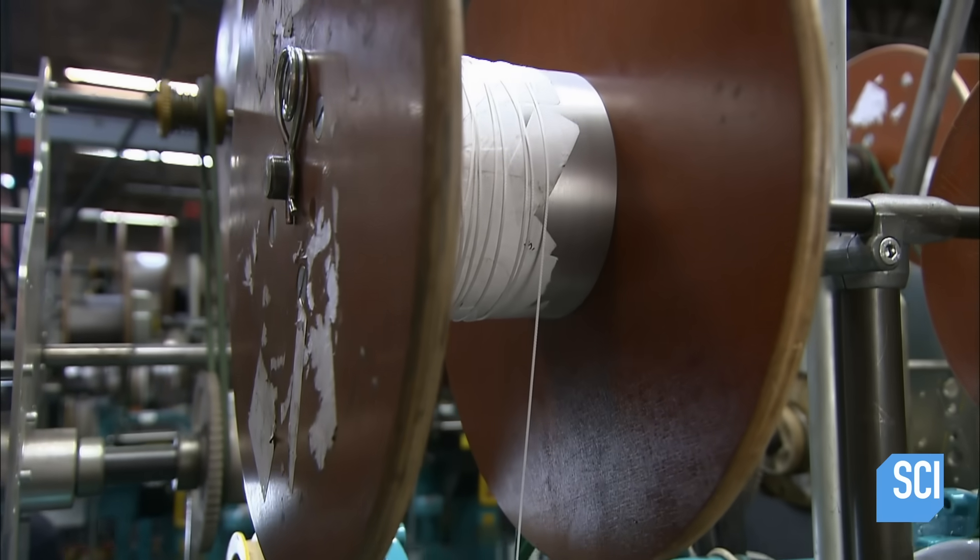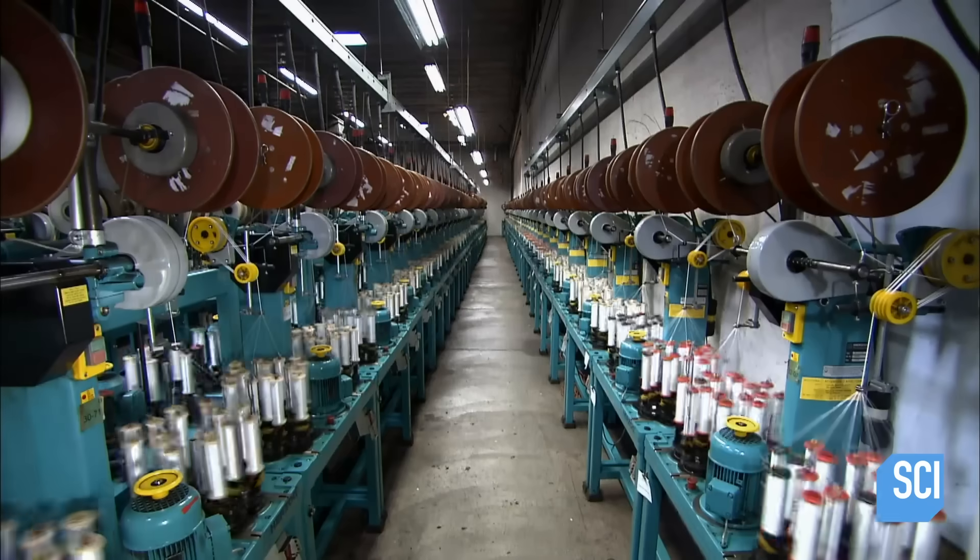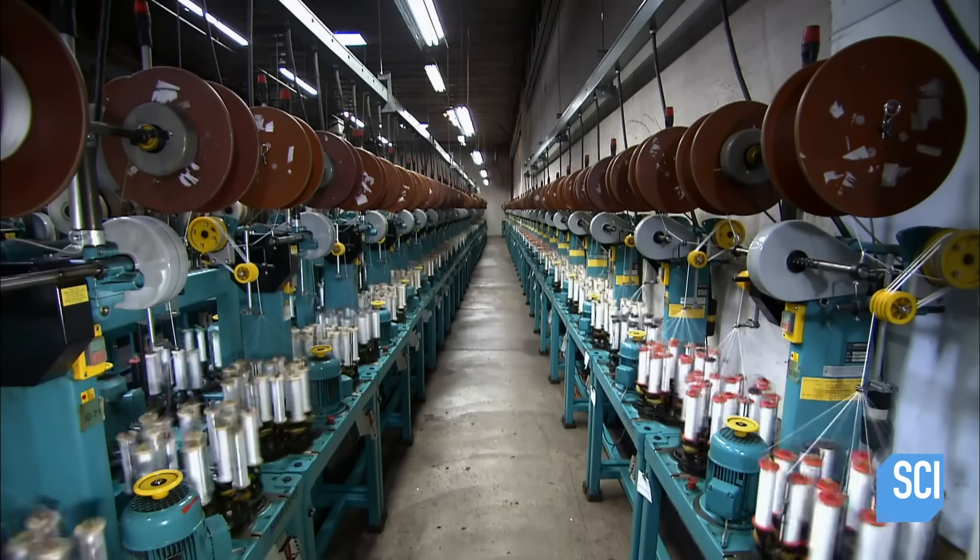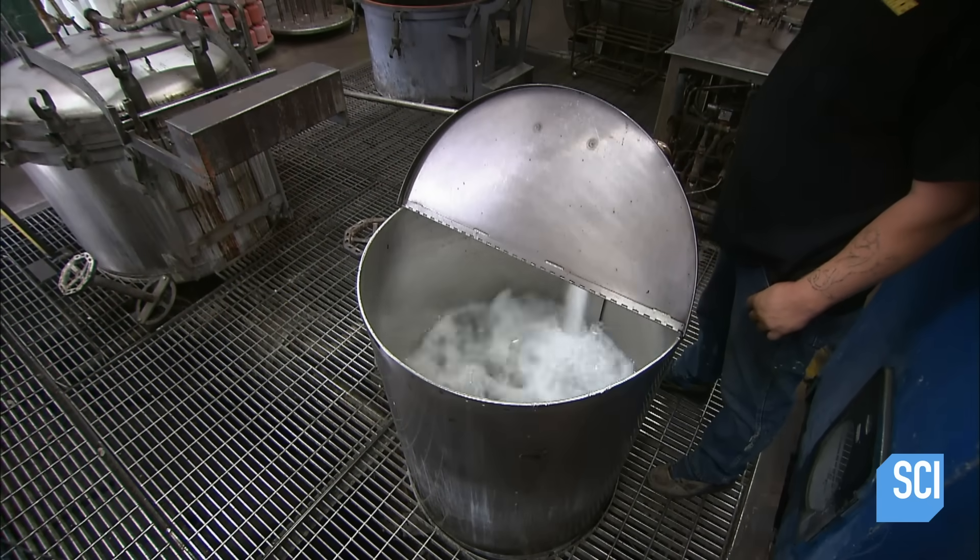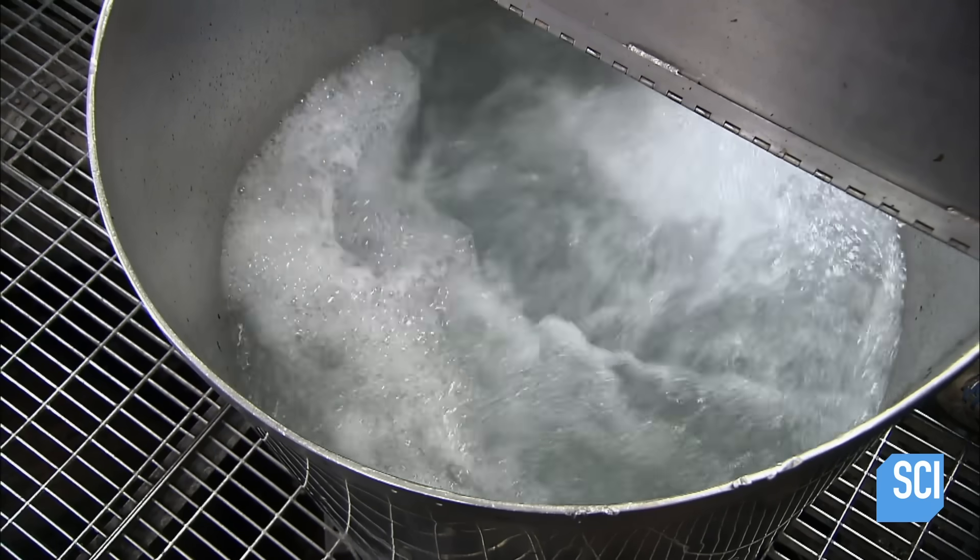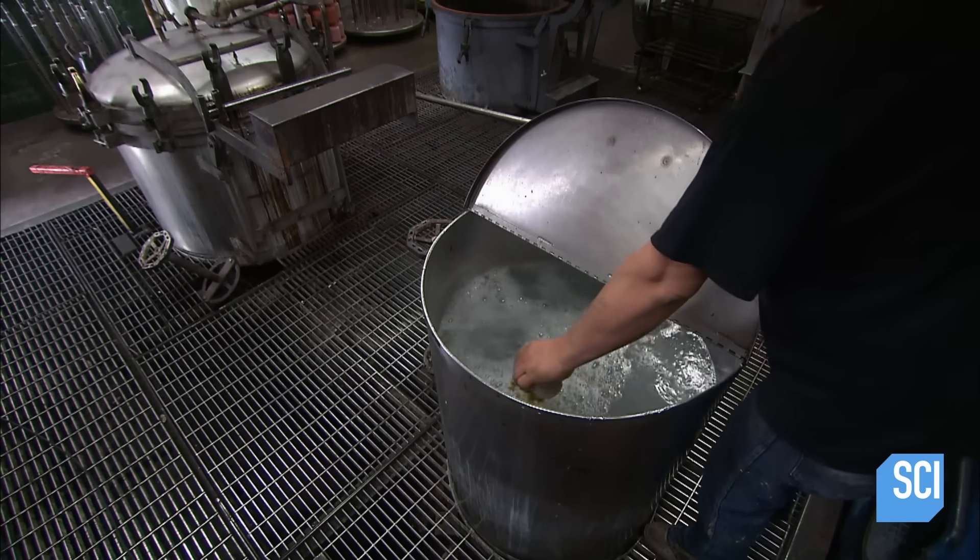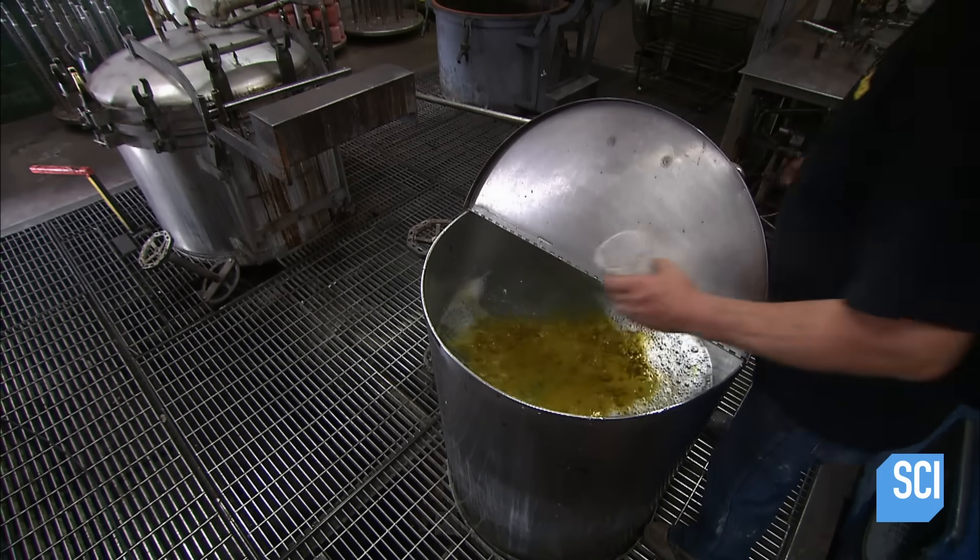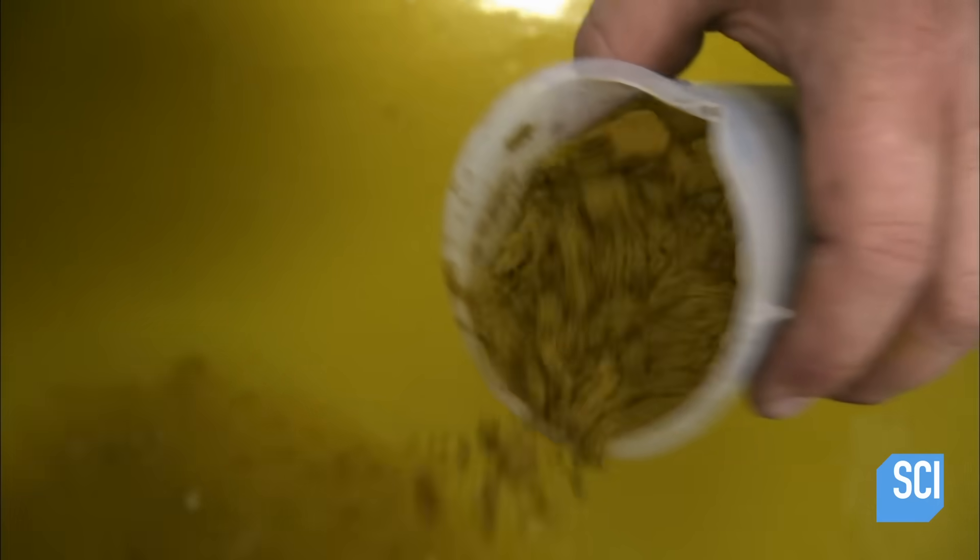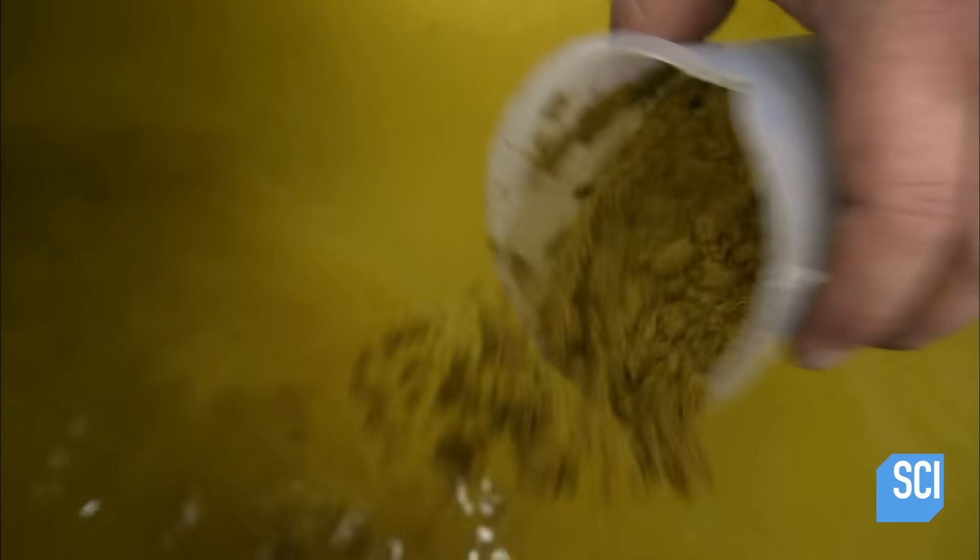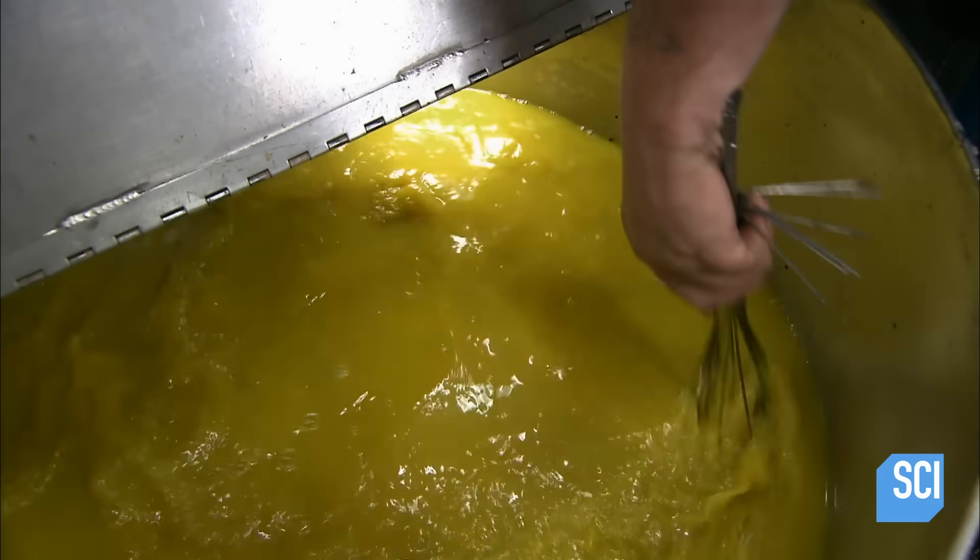Big spools overhead slowly revolve to take up the braided polyethylene line. At the same time, a worker fills a metal tank with hot water and adds yellow dye to it. A pump at the bottom of the tank keeps the water moving to evenly distribute the dye. He stirs it a bit while he inspects the mixing job.